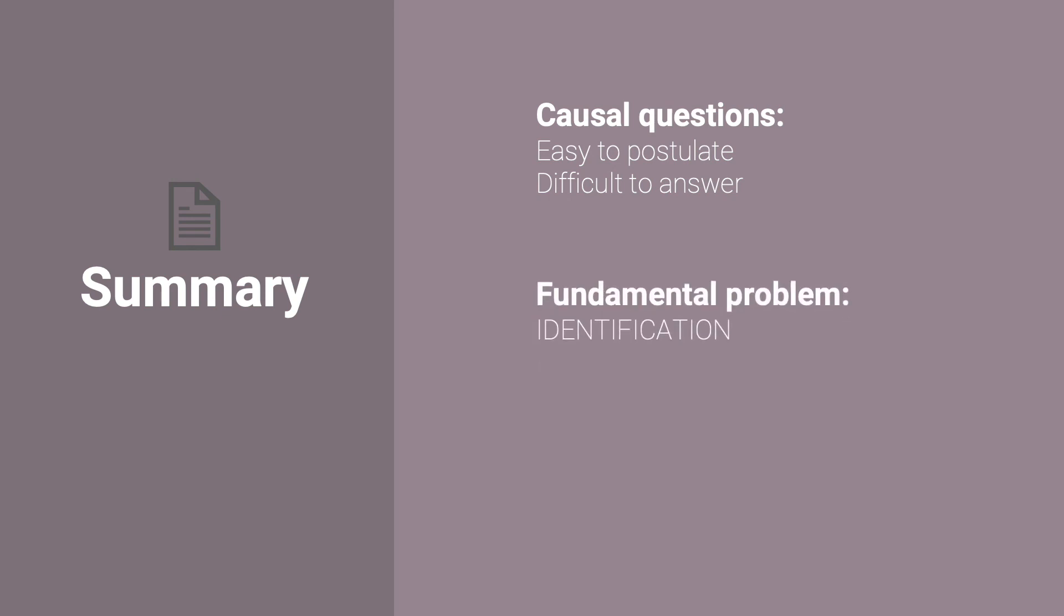This is due to, first, a problem of identification. At any point in time, we cannot observe a person, a firm, a country, or so on, under both the treatment of interest and in its absence. Second, there is a problem of confounding or selection bias. When data are available, treated individuals and non-treated individuals need to be comparable before treatment is available and delivered, for us to be able to answer causal questions.